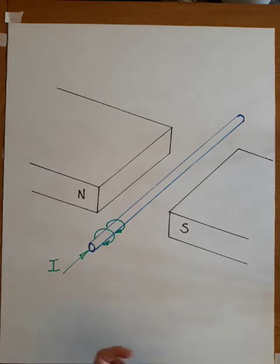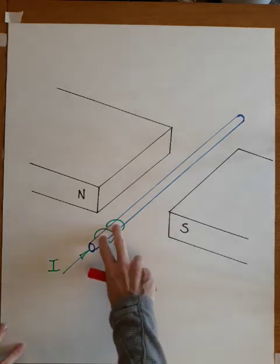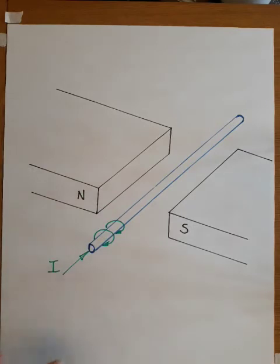And what's going to happen now is this field and the fixed field from the poles of the magnet will produce a force which will push this conductor out of the magnetic field.